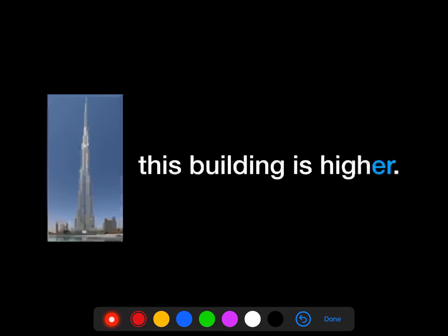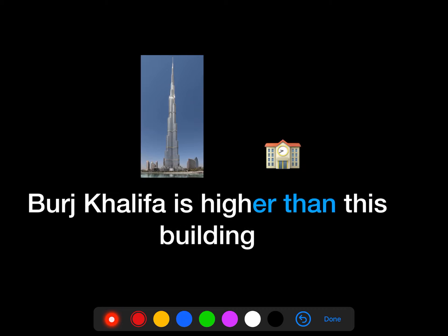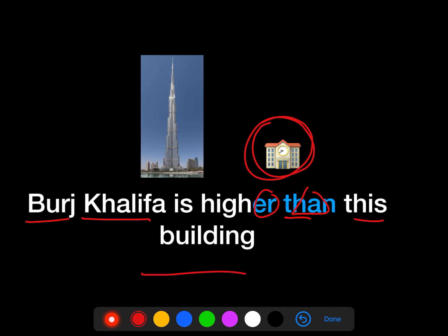From what we have learned from the previous video about comparative adjectives, we should change the form of the adjective 'high' into 'higher' — we add ER. When we compare Burj Khalifa with this small building, we need to use THAN to compare one thing with another. For example, Burj Khalifa is higher than this building. This was a comparative adjective.